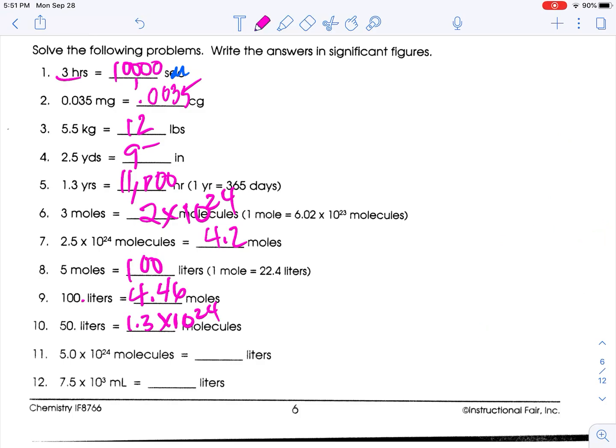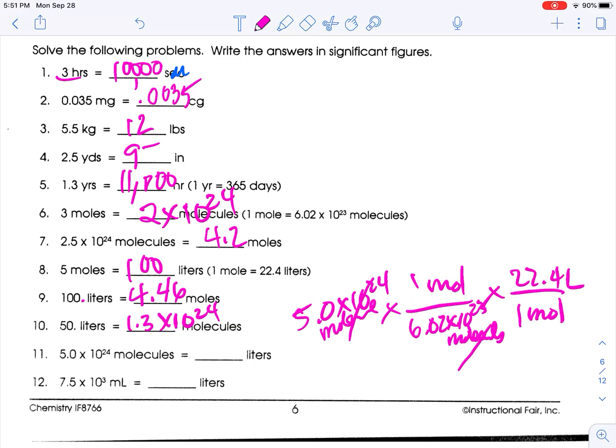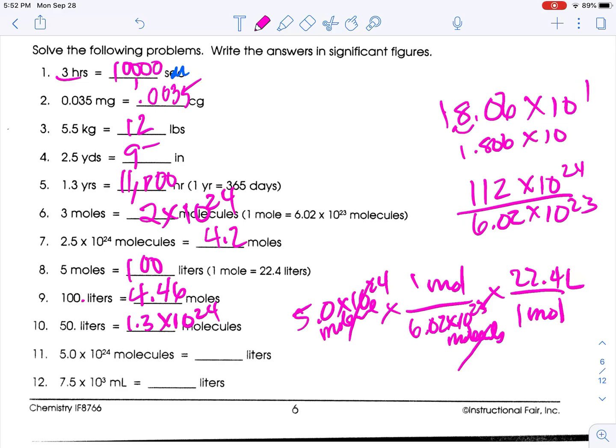5 times 10 to the 24th molecules. 6.02 times 10 to the 23rd molecules is 1 mole, and 1 mole is 22.4 liters. It's just the opposite of what we did before. So 5 times 22.4 gives me 112 times 10 to the 24th divided by 6.02 times 10 to the 23rd, which is 18.06 times 10 to the 1. That gets smaller: 1.806 times 10 squared. Then sig figs: 1.8 times 10 squared, which you could also write as 180.